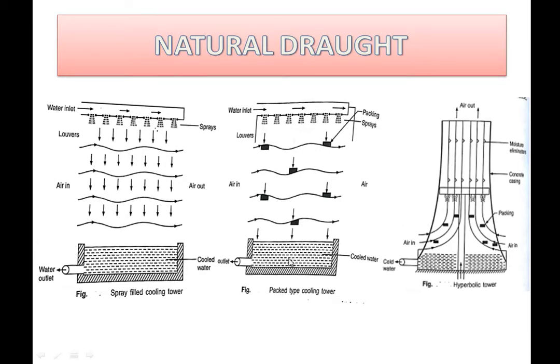The third is the hyperbolic tower. As you can see, the shape of the hyperbolic tower is that of a chimney. It creates a natural draught which makes it more efficient. From here the water is sprayed and from the bottom the air inlet is present. The air inlet goes through the packing and then to the outside air due to the natural draught, and the cold water is collected at the bottom of the hyperbolic tower.